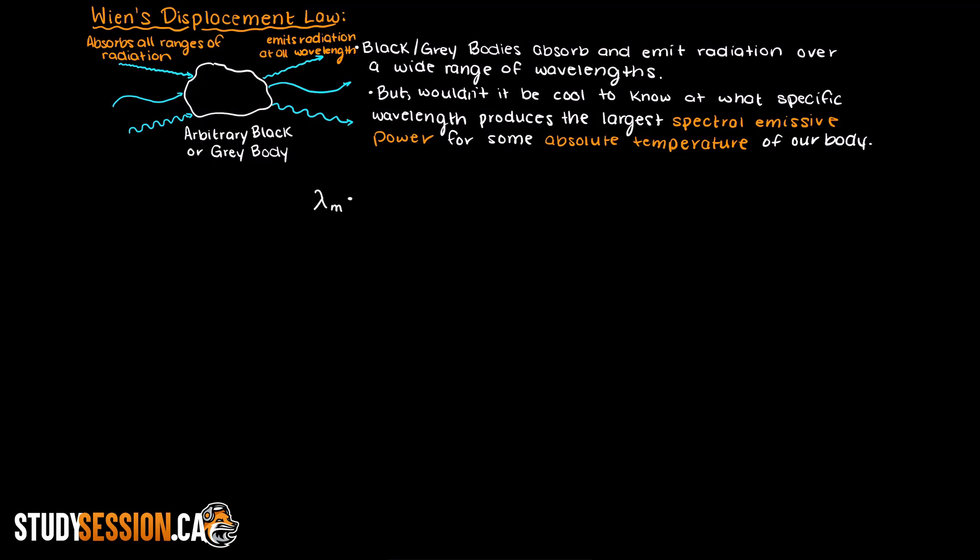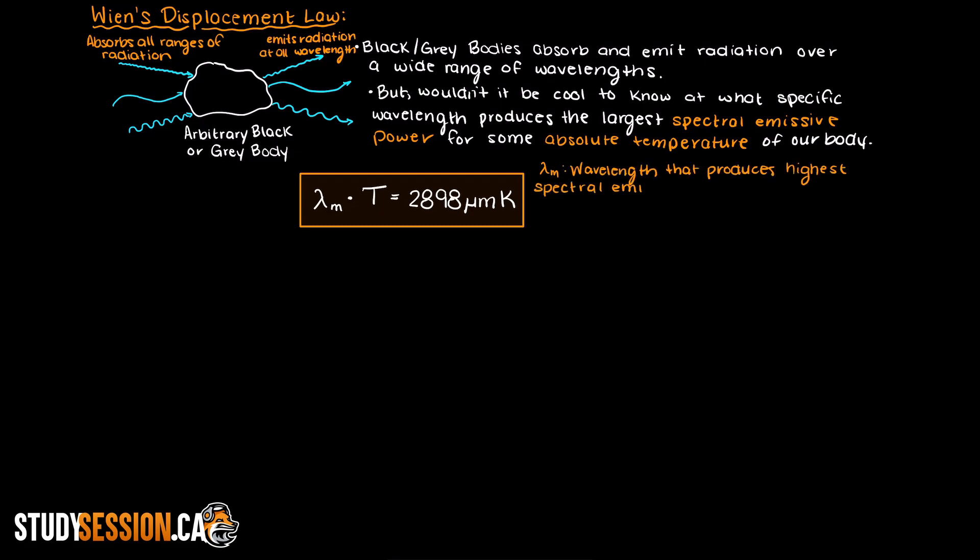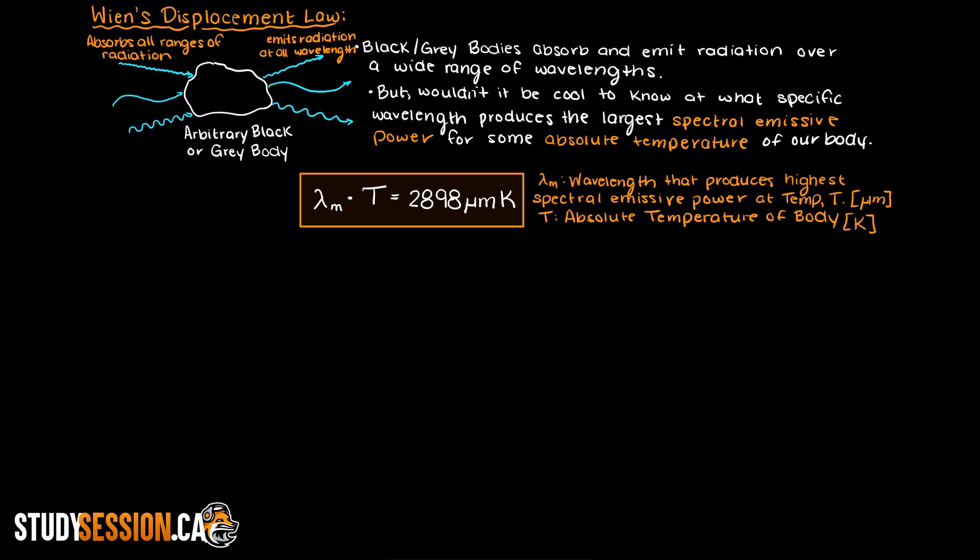Wien's displacement law states that the wavelength that produces the largest flux of radiation times the absolute temperature of the body is equal to 2898 micrometers kelvin. Therefore from this equation it is evident that increasing the absolute temperature of our body, the wavelength that dominates its emission will shift to smaller wavelengths.